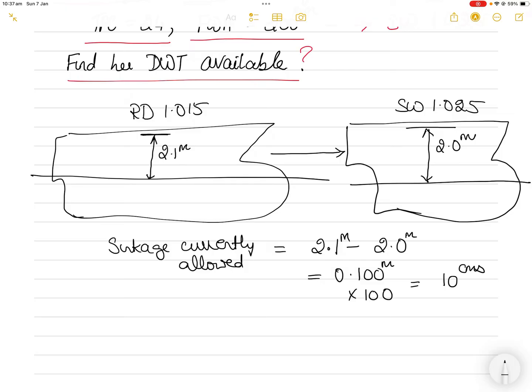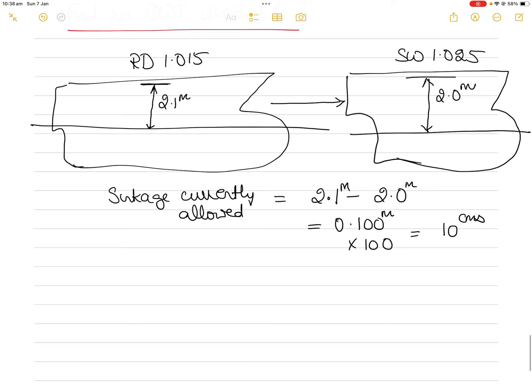I convert to centimeters because I will multiply this sinkage by TPC, which stands for tons per centimeter of immersion. This is the sinkage currently allowed to reduce the freeboard to your statutory freeboard. However, the vessel will rise as it goes from 1.015 to 1.025.